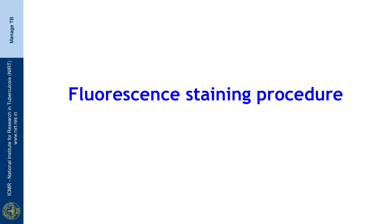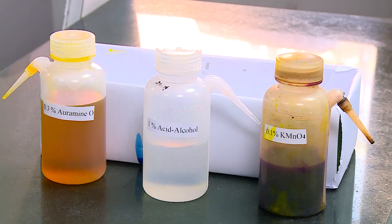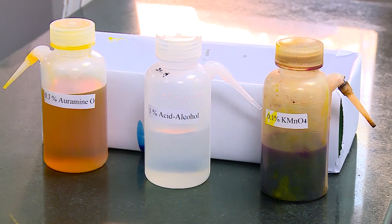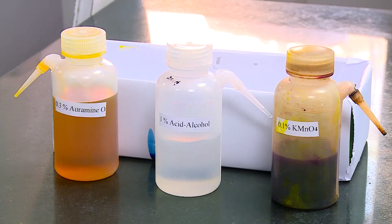Next we come to the fluorescent staining procedure. First the smear is flooded with auramine phenol and left for about 7 minutes. After washing gently with water, the smear is flooded with acid alcohol for about 1 minute for decolorization. After washing gently with water, it is flooded with potassium permanganate for about 45 seconds. After washing with water and drying completely, it is scanned under the low power dry objective and then read under the high power dry objective of the integrated LED microscope. The 3 solutions are 0.3% auramine phenol as the primary stain, 1% acid alcohol for decolorizing, and 0.1% potassium permanganate for restaining.